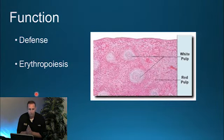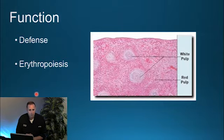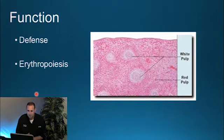Erythropoiesis begins at about the fifth to sixth month of fetal development. This is very important because later in life the bone marrow takes over red blood cell manufacturing, but should the bone marrow be compromised, the spleen would then regain its function of producing red blood cells, and it can regain this function anytime throughout life.